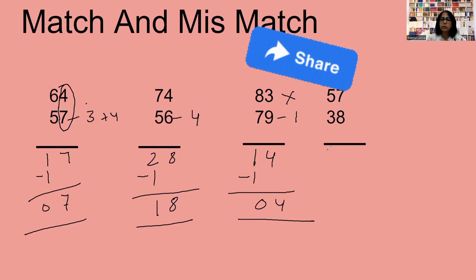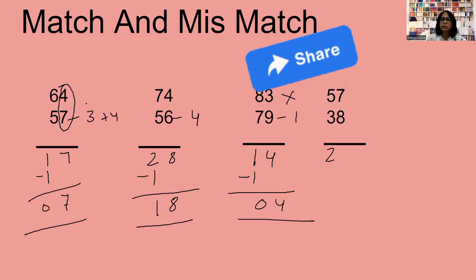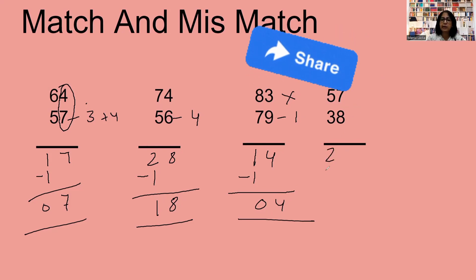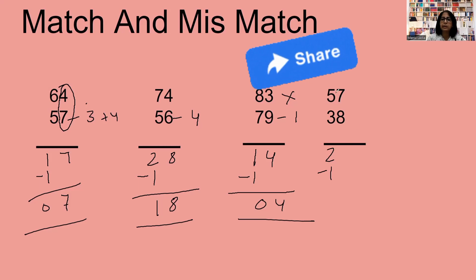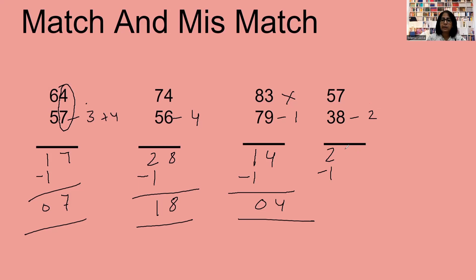Next example: 5 minus 3 is 2. It is a mismatch number, so I take minus 1 here. Then the complement of 8 is 2, and 2 plus 7 is 9. So the answer is 19. Simple! Like this you can do 3-digit problems also.